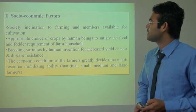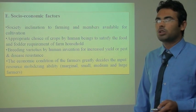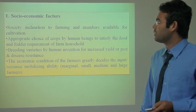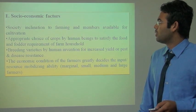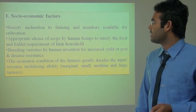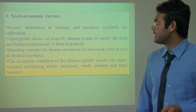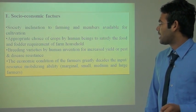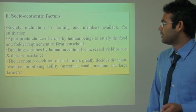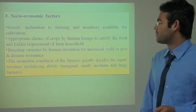The last factor is the socio-economic factor. Society's inclination to farming and the members available for cultivation, along with the appropriate choice of crop by human beings, help satisfy food and fodder requirements of farm households. Breeding of varieties by human innovation further increases yield and pest and disease resistance. The economic condition of farmers greatly determines the input and resource mobilizing ability, varying across marginal, small, medium and large farmers.